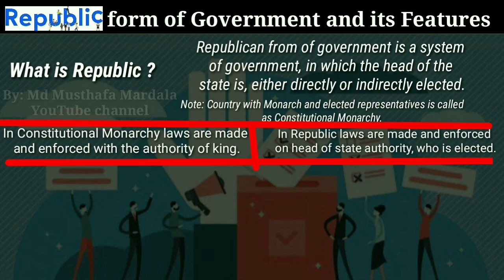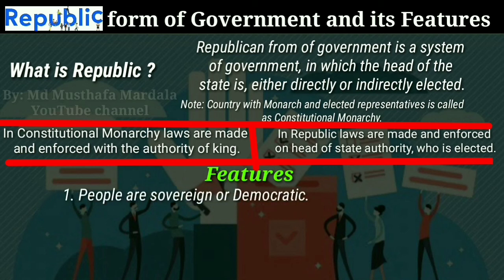In most republican forms of government, the head of state is known as the president. Another important factor to note is that the world's first republican form of government was established in Vaishali of ancient India. Now let us discuss the characteristics of a republican form of government. The first characteristic is that the people are sovereign — the power of republican government emanates from the people, meaning every representative including the head of state is elected by the people.